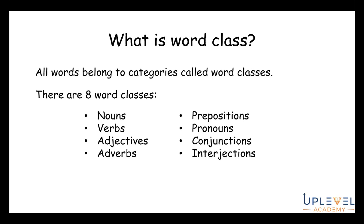An analogy would be sorting and organizing books into categories — for example by genre. Within fiction you might have adult fiction or children's fiction, and within those you might be specific: adventure or sci-fi. We can identify a book as fiction-adventure because of the characteristics of that genre. The same is true for words — nouns, for example, have characteristics that allow us to group them into their category.